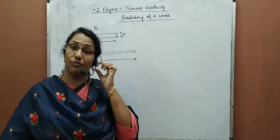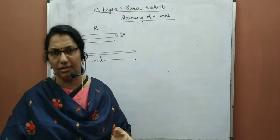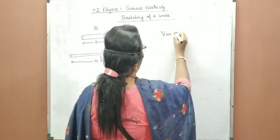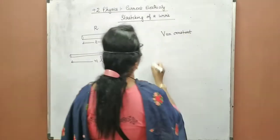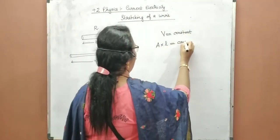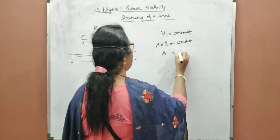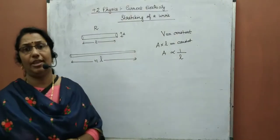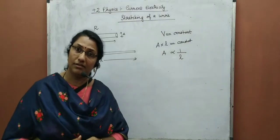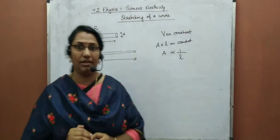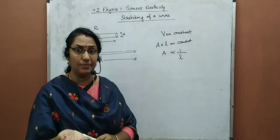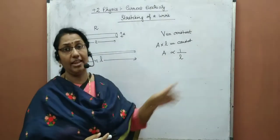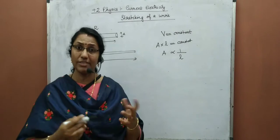Since volume remains constant, area times L is constant, meaning A is inversely proportional to L. When length increases to N times, area of cross section decreases by N times. So the new length L' equals N·L, and the new area A' equals A/N. When length is made 2 times, area becomes A/2; when 3 times, area becomes A/3; when N times, area becomes A/N.